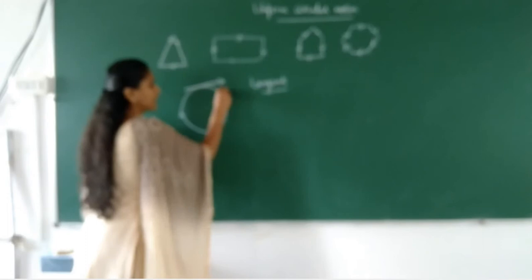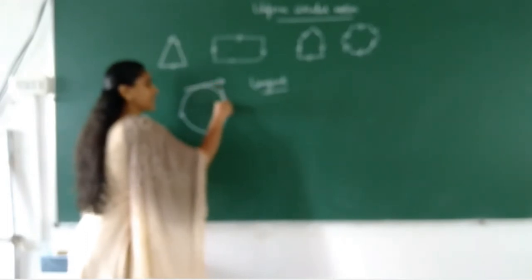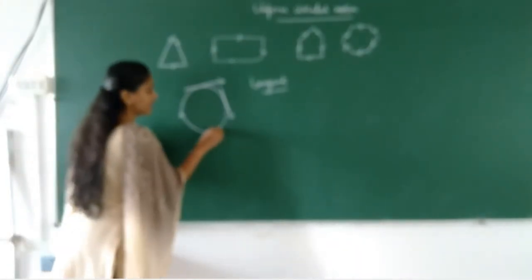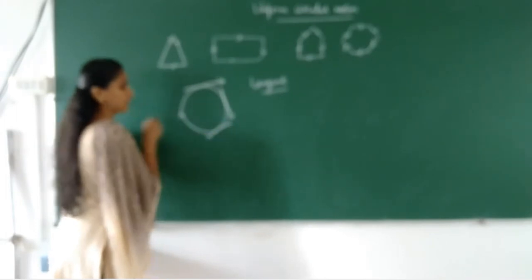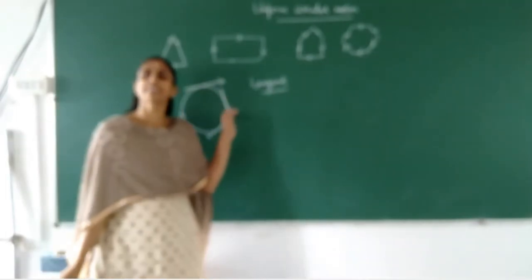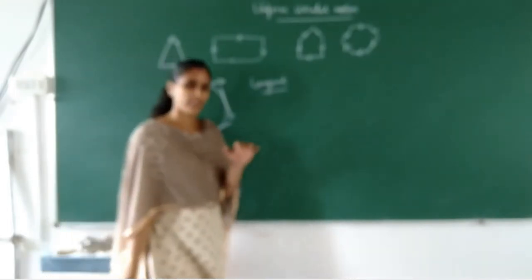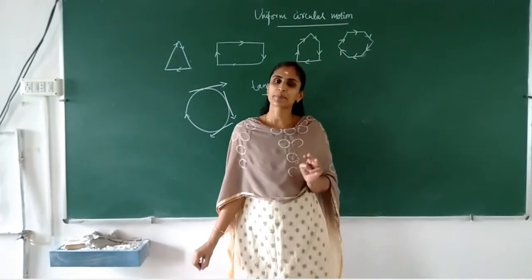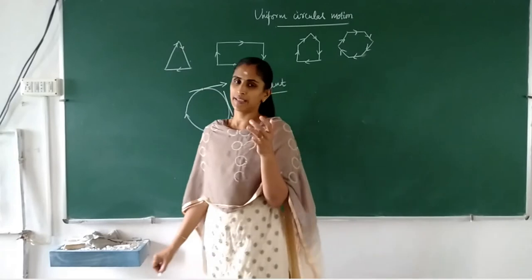For example, when it reaches another point, you can draw a straight line that touches only at that point — this shows the direction of velocity. Again when it reaches the next point, you can draw the tangent, which shows the direction of velocity. So you can see that at each and every instant, the direction of velocity is changing.